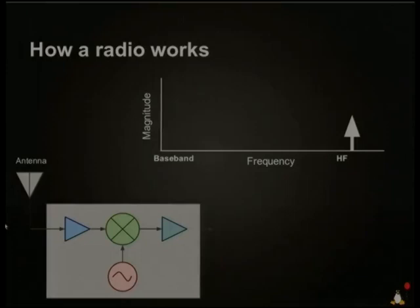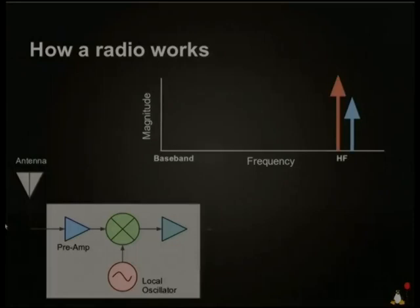First, we have the HF signal coming in from the antenna — it's up at a high frequency, relatively small magnitude. The first thing we do is boost that up so our circuit can process it. The first block is the preamp, so that little HF arrow gets a little bit bigger. The other important component feeding into the radio is the local oscillator — a signal generated locally by the radio. In my radio we're using a little crystal oscillator to generate that signal.